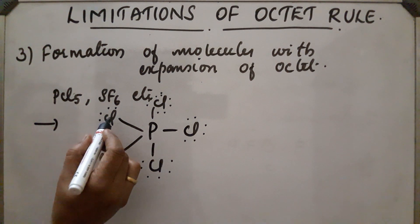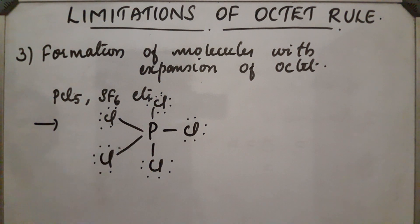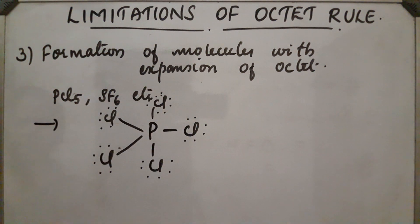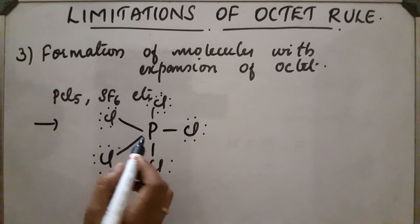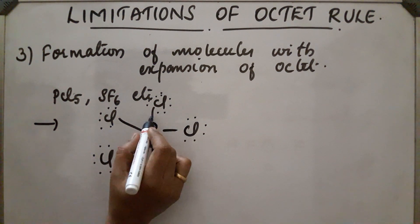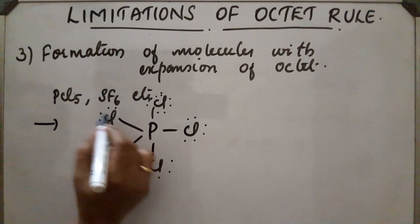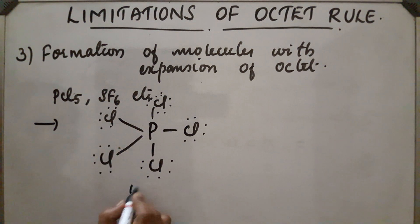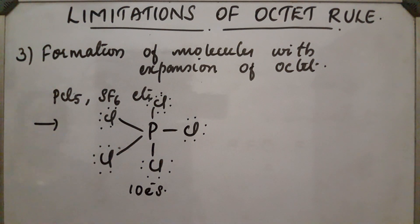In PCl5, all the chlorine atoms follow the octet rule. But in the case of phosphorus, it contains 1, 2, 3, 4, 5, 6, 7, 8, 9, 10 electrons in its outermost shell. So phosphorus violates the octet rule.